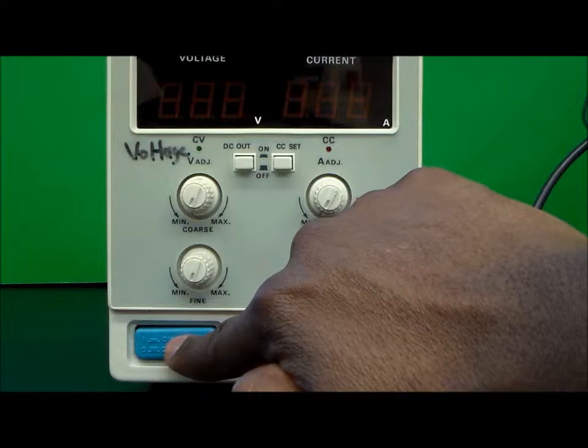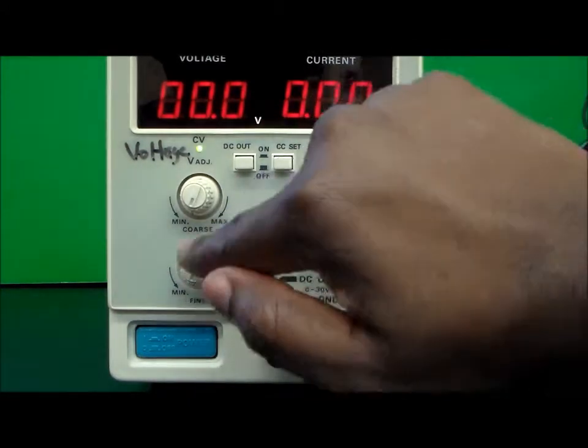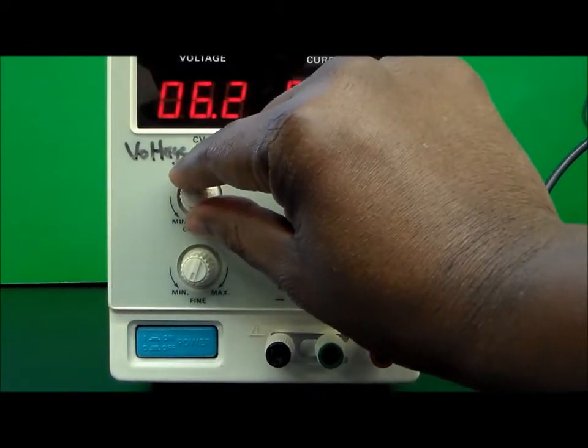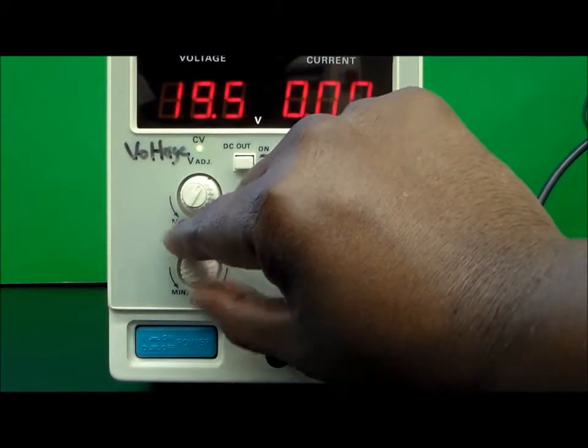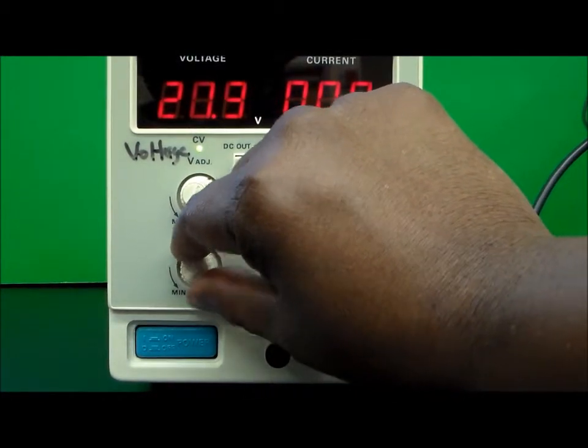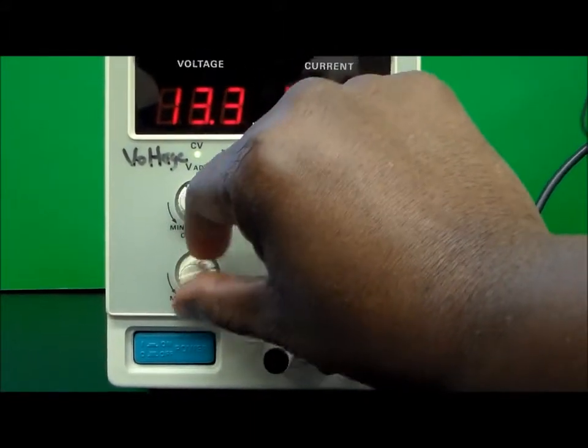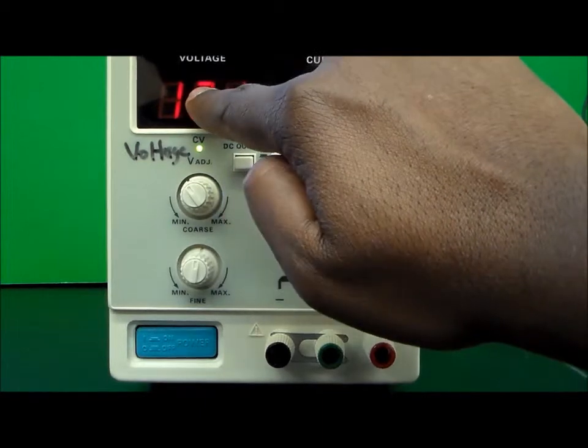So let's turn this on real quick and take a look at how this works. What you'll notice here is that if I turn this knob here, the numbers increase pretty fast. But if I turn this knob at the bottom, they increase at a slower rate as I turn the knob clockwise. So these knobs here adjust the voltage of the power supply.